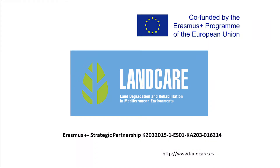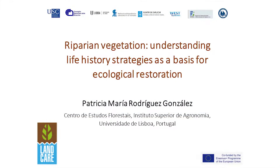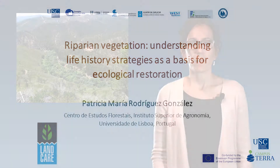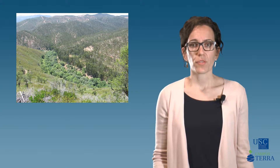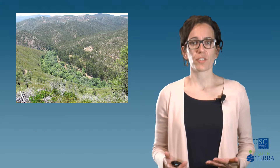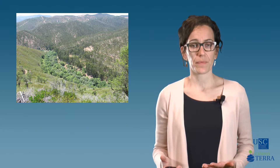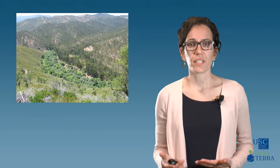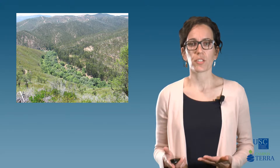What is riparian vegetation? Riparian vegetation is a key feature of fluvial landscapes, where it plays ecological functions and provides ecosystem services for the society. In this video, we are going to learn about the life history of riparian vegetation as a basis for ecological restoration.